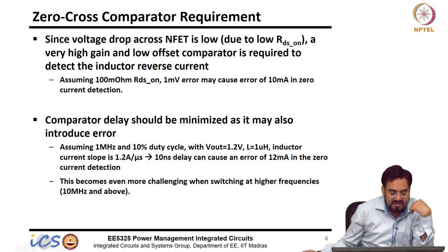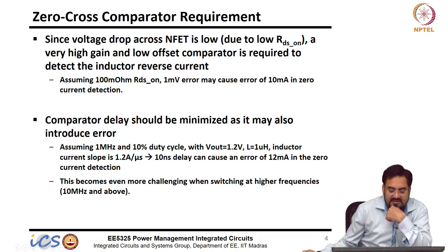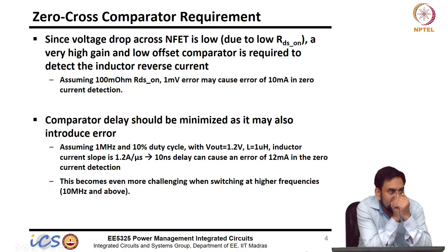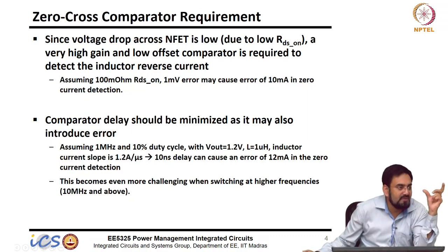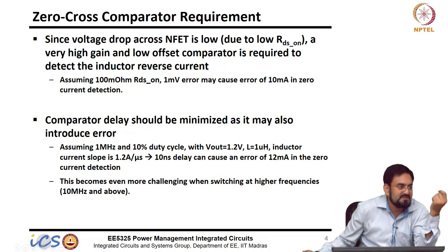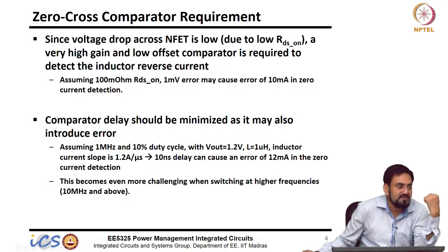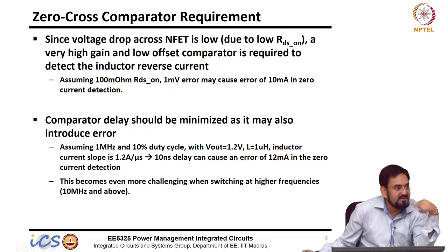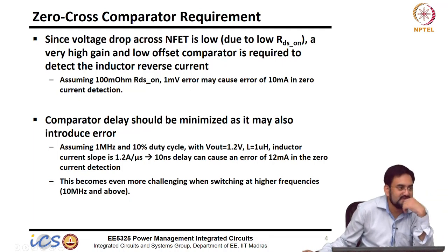Assuming 100 milliohm RDS_on and 1 millivolt error, you are off by 10 milliamps in the current, because 100 millivolts will be the drop when you have a 1 amp current. Which means 1 millivolt — 1 percent — will correspond to 10 milliamp error. Instead of detecting 0 current you will be detecting minus 10 milliamps, which means you are losing in the FET and that will reduce your efficiency.